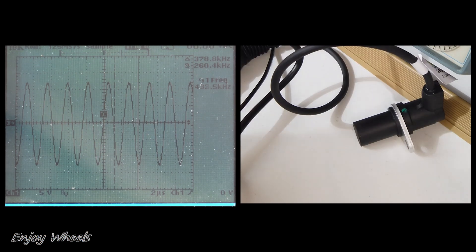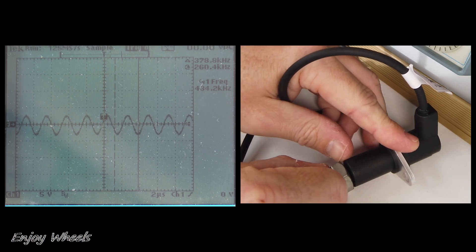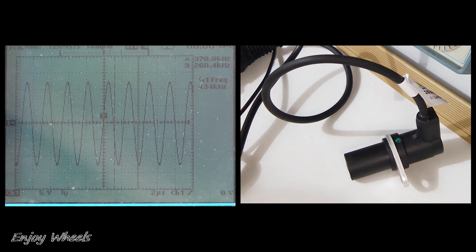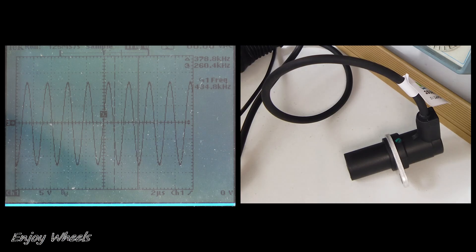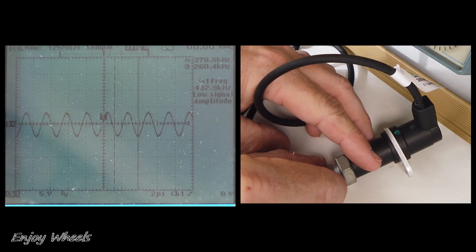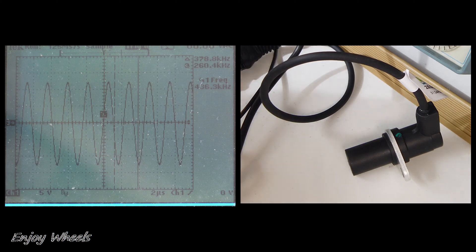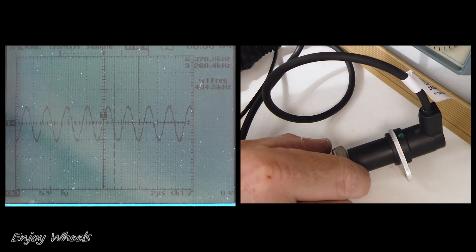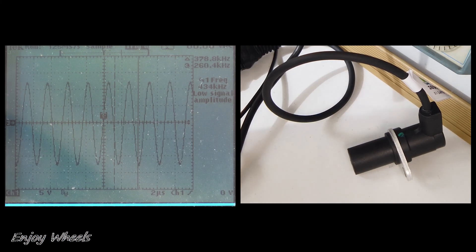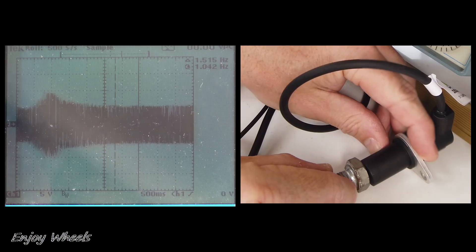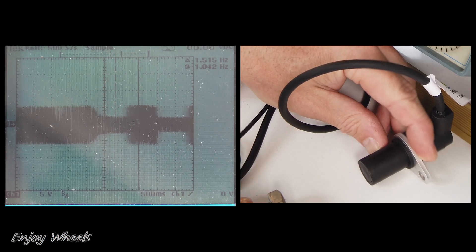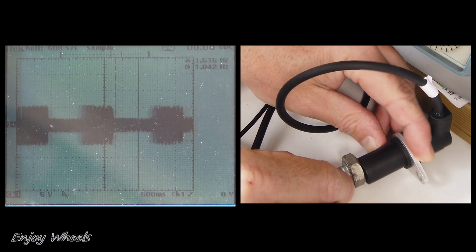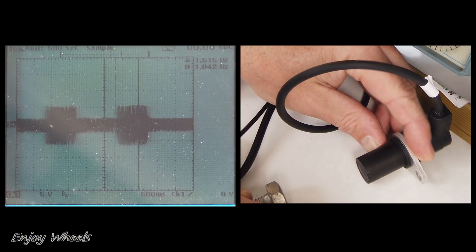And now, I approach my screw of the sensor. And look, the amplitude of the secondary has decreased. I remove my screw, and the amplitude returns as before. You have understood, when I approach my screw, a part of the magnetic flux is absorbed by it, and therefore the secondary voltage decreases. And in the car's computer, there is a system which measures this amplitude, and which deduces whether or not there is a tooth in the shaft. And if I put the oscilloscope in scrolling mode, you can see that very well. And there you go. Now you know how to test and operate an oscillating inductive sensor.